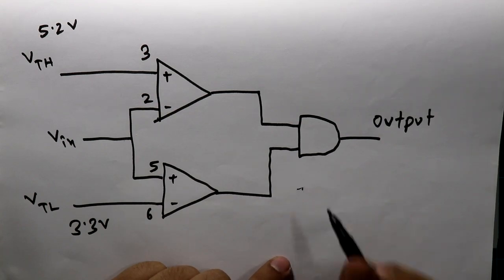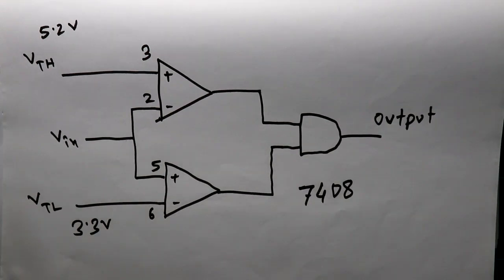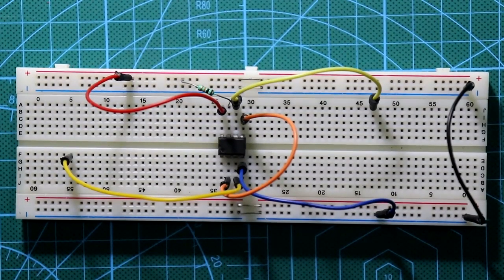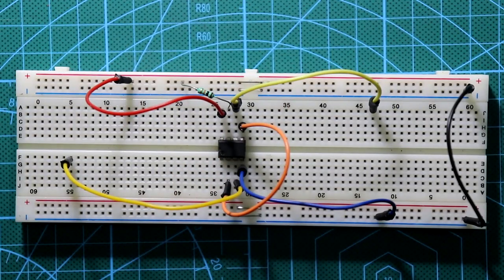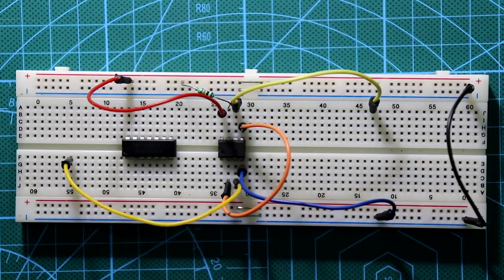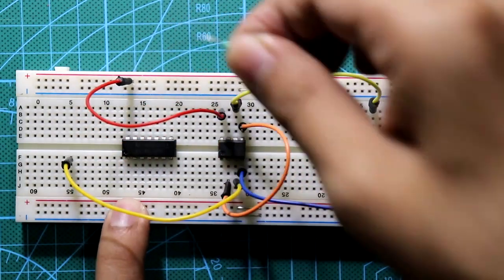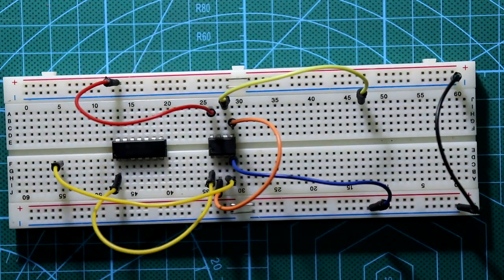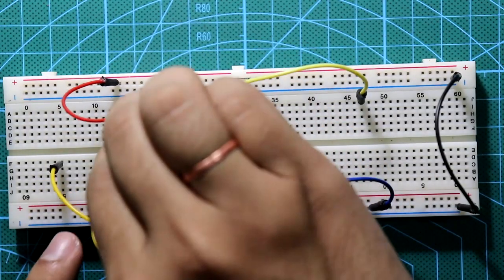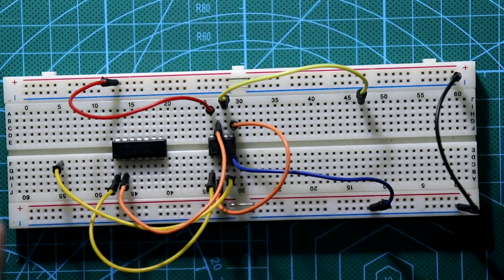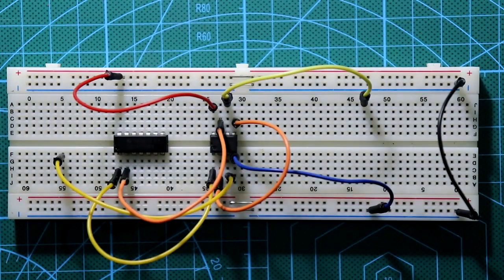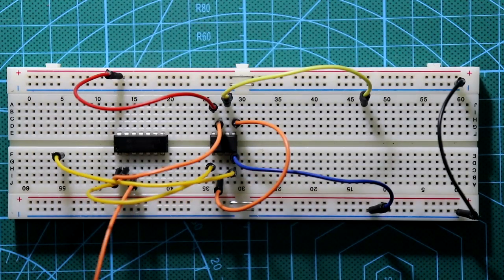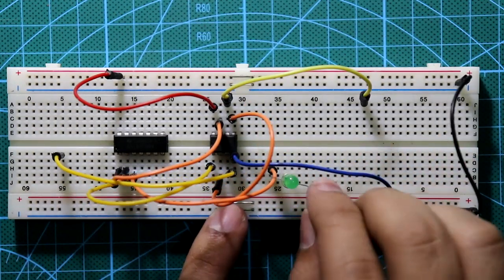I am using the 7408 AND gate IC. Now let's see the circuit. This time we will not connect pins 1 and 7 together — instead we will provide these two pins as inputs to the AND gate. We don't need the pull-up resistor this time. Pin number 1 of LM358 will go to pin number 1 of IC 7408, and pin number 7 of LM358 will go to pin number 2 of IC 7408 — that is gate number 1 of the 7408. We'll take the output from pin number 3 of the 7408 and connect the LED there with the cathode going to ground through a 100 ohm resistor.